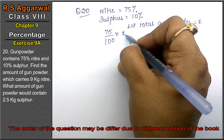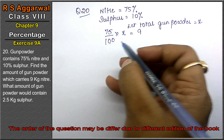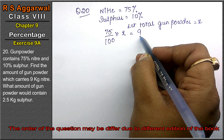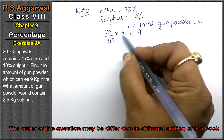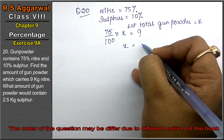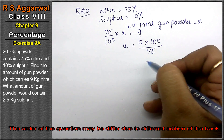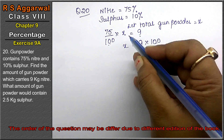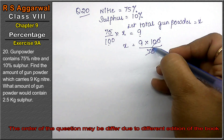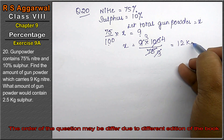Total gunpowder ka 75% nitrate hai, which equals 9 kg of nitrate. So to find x: x = 9 into 100 divided by 75. Here the division becomes multiplication: 9 into 100 upon 75. Three 3s are 9, so the answer is 12 kg. The amount of gunpowder is 12 kg.